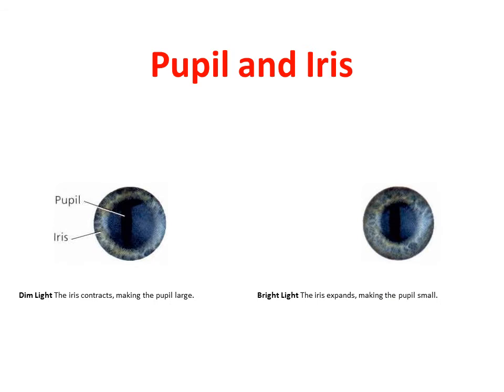Light enters the eye through the transparent front surface which is called the cornea. It protects the eye and also acts as a lens to focus the light rays. After passing through the cornea, light enters the pupil.